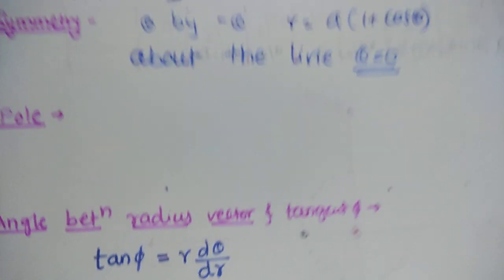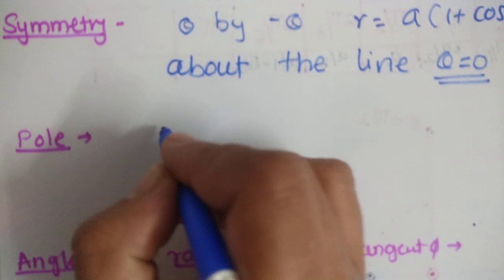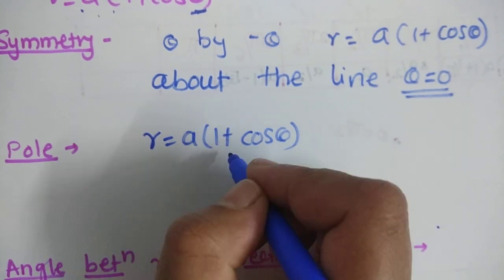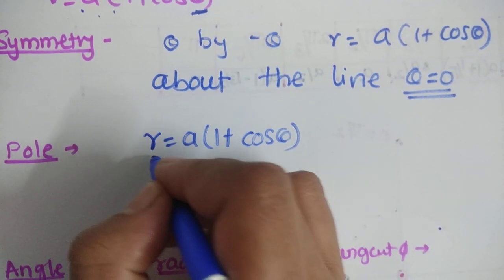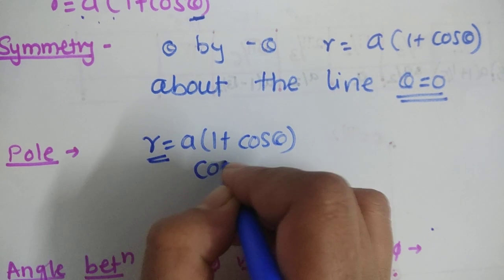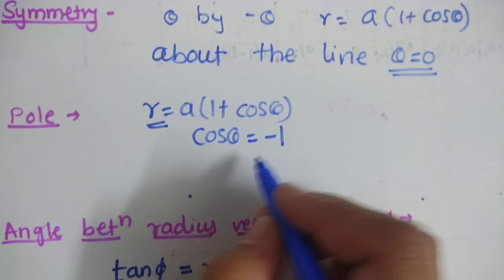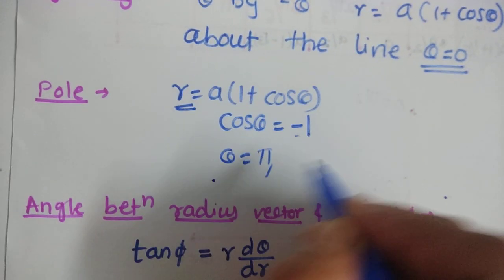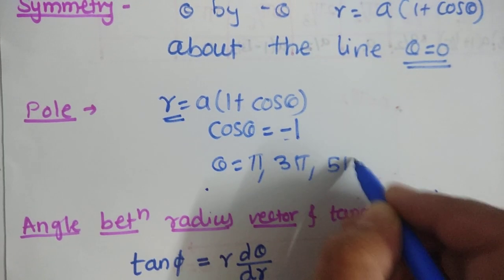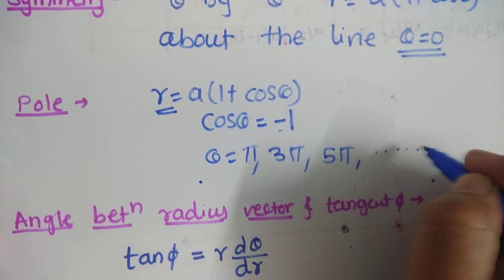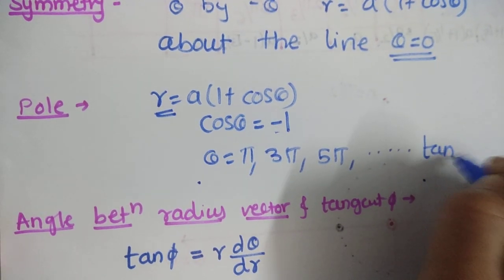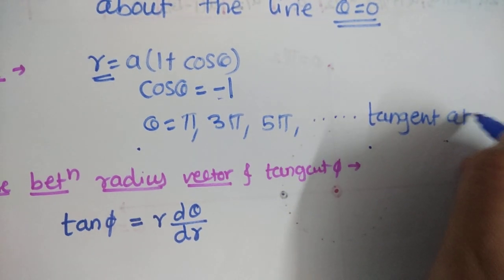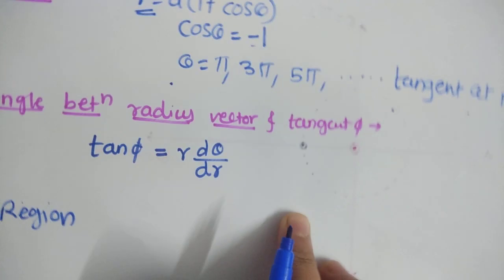Now, whether the origin lies on the curve or not: we have r = a(1 + cos θ). For the origin to lie on the curve, r must become 0, so cos θ = −1. This gives θ = π, 3π, 5π, and so on. These values represent the tangent at the pole (tangent at origin).